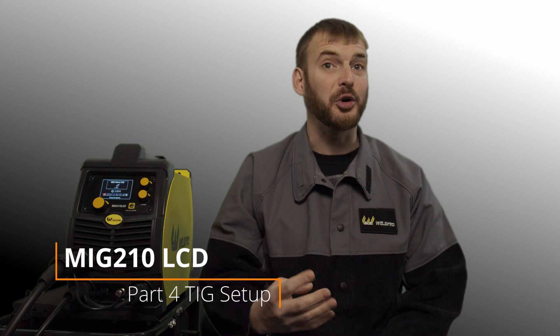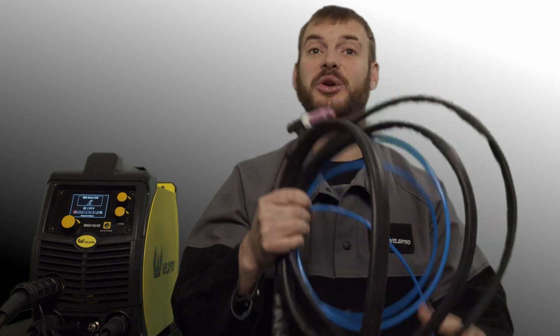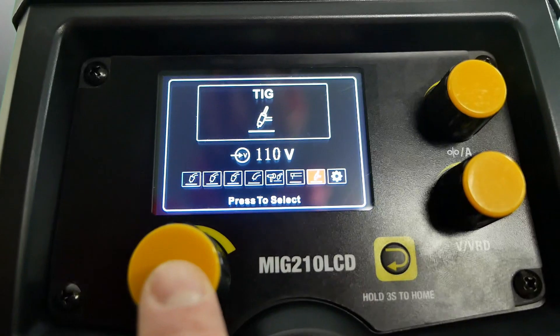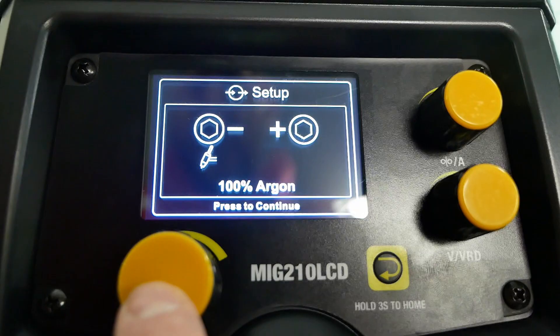Hey everyone, I'm Luke from WeldPro and today I'm here with part 4 of the setup series on the MiG-210 LCD. Today we're going to be talking about setting up the TIG torch. The MiG-210 LCD is a very capable DC TIG welding machine. The new interactive TIG menu makes setting up and running this process very easy.